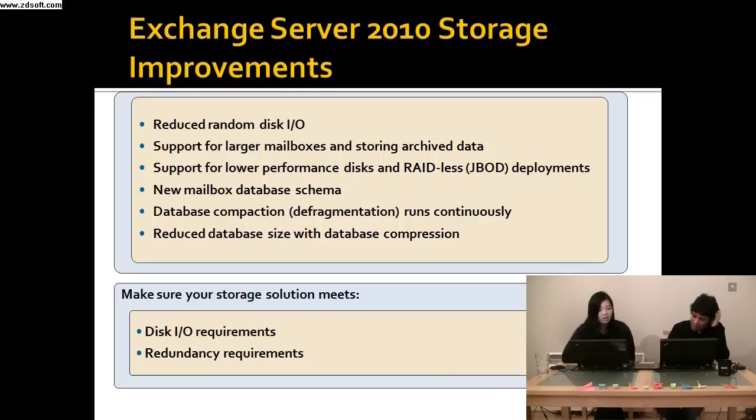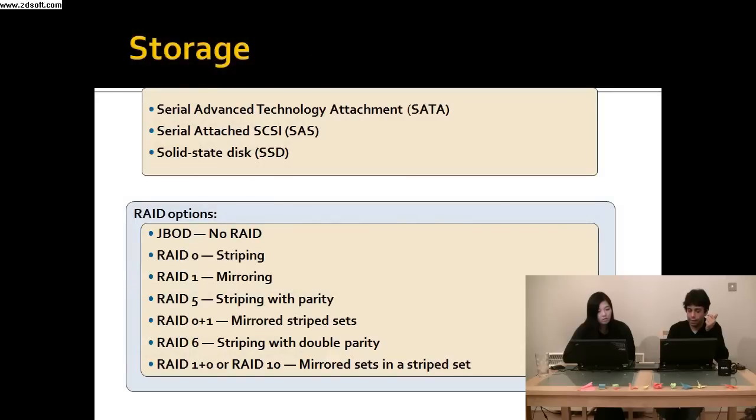So you can see they've always got little arguments about it. The storage improvements increased by 70% from Exchange 2007, or reduced by 70%, and reduced by 90% from Exchange 2003. That's it. So IO requirements are lowered, which makes it a perfect candidate for virtualization.